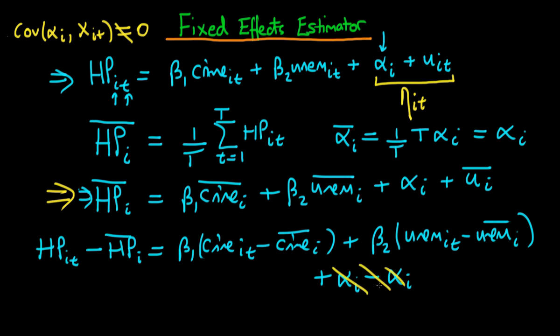taking off the time mean, essentially we have removed this unobserved heterogeneity. And then the final term which we just get is we get the idiosyncratic error minus the time average of